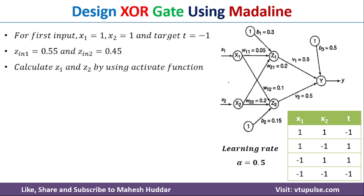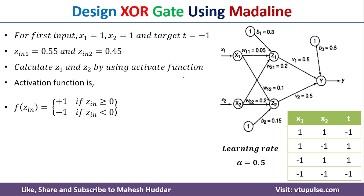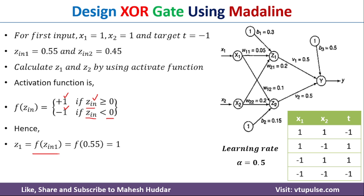To calculate the output at each neuron, we use a bipolar activation function: F(Zin) = +1 if Zin ≥ 0, and F(Zin) = -1 if Zin < 0. Since Z1_in = 0.55 ≥ 0, the output Z1 = 1. Similarly, Z2_in = 0.45 ≥ 0, so the output Z2 = 1.